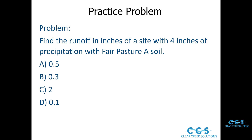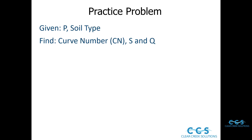So what's the approach here to solving this problem? With any FE practice problem, we want to refer to the FE reference manual, since that's what you'll have on hand while taking the test. The hydrology and water resources section is no different — we use that information to help us solve the problem. We're given P, the precipitation, as well as the soil type. Based on the equations, we need to find the curve number, S, and Q.